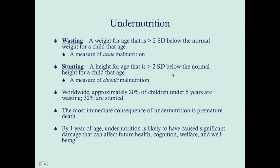With undernutrition, we look at two things. One is wasting — probably the most obvious sign of undernutrition. This is a weight-for-age more than two standard deviants below the normal weight for a child that age, and it's a measure of acute malnutrition. For instance, if I stopped eating today, two weeks from now I would have lost probably a good 25 pounds. You can also be chronically malnourished and be really thin, but low weight is more a measure of acute malnutrition.